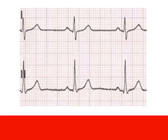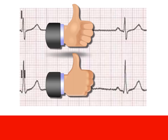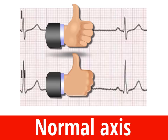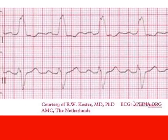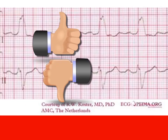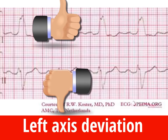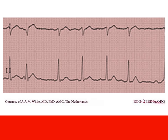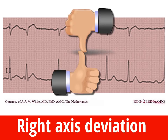Let's try that again with some examples. In this ECG, there's two thumbs up so the axis is normal. In this ECG, thumbs have left each other so it's left axis deviation. And finally, in this ECG, thumbs are headed right for each other so it's right axis deviation.